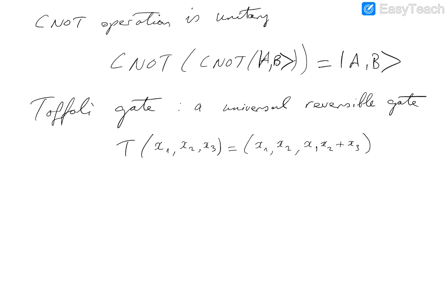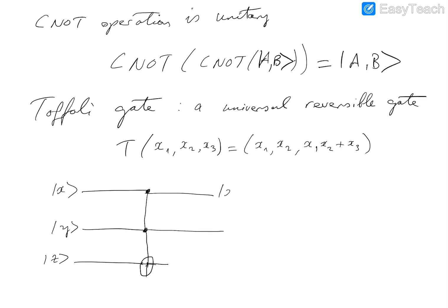In other words, it takes three inputs |x⟩, |y⟩, |z⟩. The first two outputs are the same as the inputs, and the third output is z XOR (x·y).